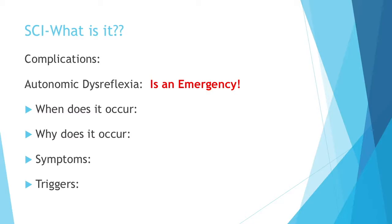Triggers for autonomic dysreflexia include distended bladder, which is the most common, distension or contraction of visceral organs — think constipation — and skin stimuli. Something as small as a wrinkle in the bedsheet can actually cause this. It's just an exaggeration of the nervous system. A super distended bladder puts a lot of pressure on nerves, and constipation can lead to it. Usually the treatment is removing the stimulus and hopefully it resolves.